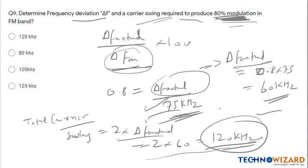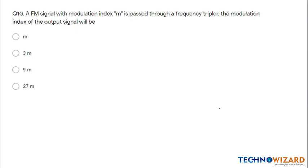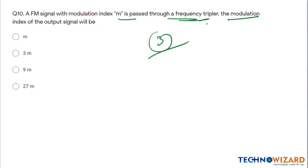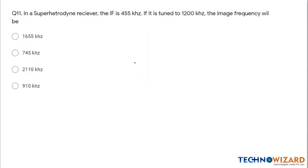Question 10: An FM signal with modulation index m is passed through a frequency tripler. The modulation index of the output signal will also be three times the original, becoming 3m.